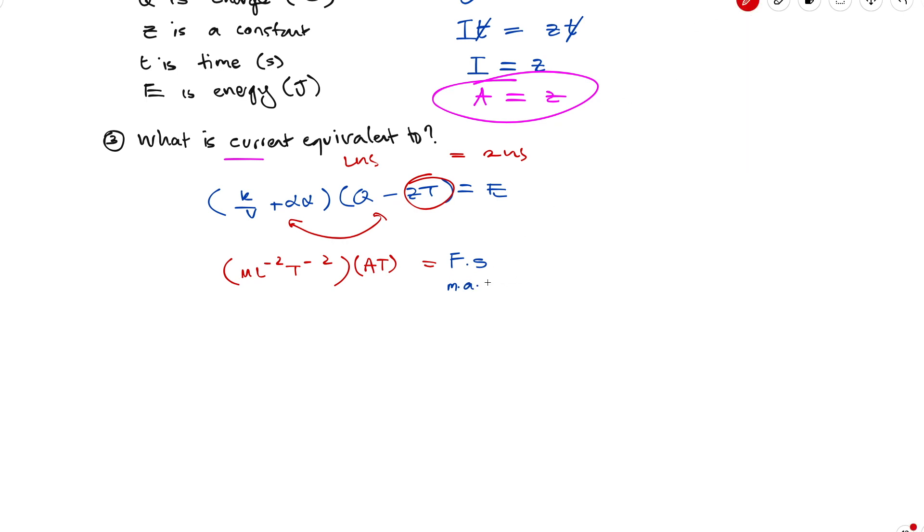Now this is where we have to detour to formulas again. Energy is work, which is force times displacement. And force is mass times acceleration. And displacement is length. So we'll go with that.